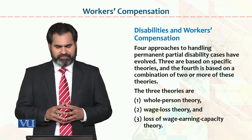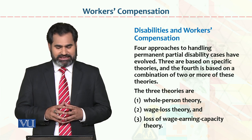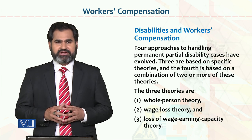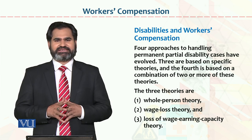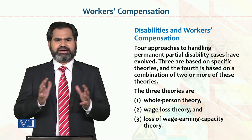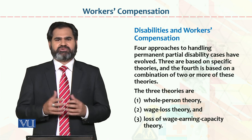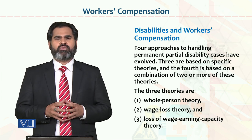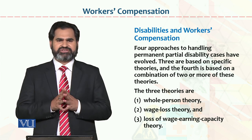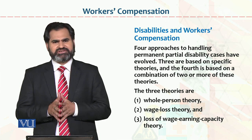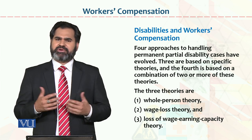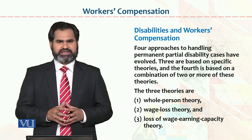The three theories are: Whole Person Theory, Wage Loss Theory, and Loss of Wage Earning Capacity Theory. Agar in tino theories ke words pe gaur karein, to inme wage aur salary ka zikar aaya hai. Ye theories thoda sa different hain, lekin in tino ka jo bunyadi maqsad hai woh yeh hai: how we will compensate our employees in cases of partial, permanent, and temporary disabilities.